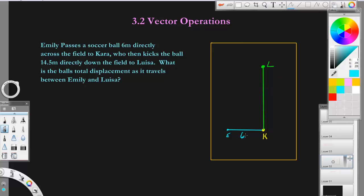So let's label. So this is six meters. This is 14.5 meters. And the question wants to know what is the ball's total displacement, which remember displacement's a vector, as it travels between Emily and Louisa. So this ball trip is going to be this red line right here.